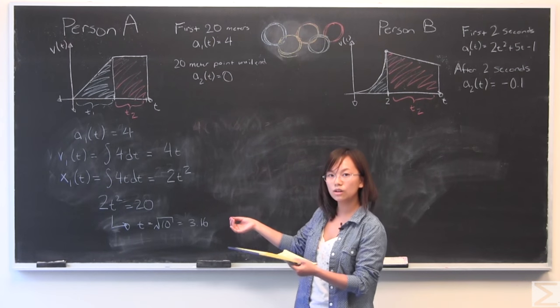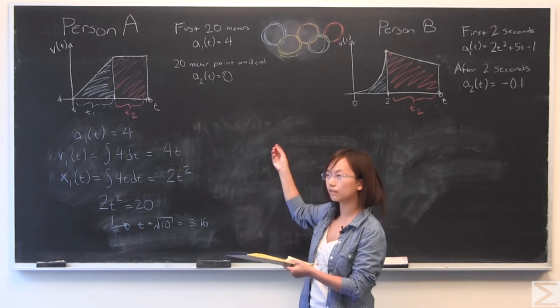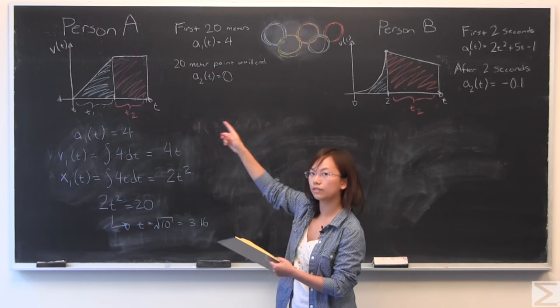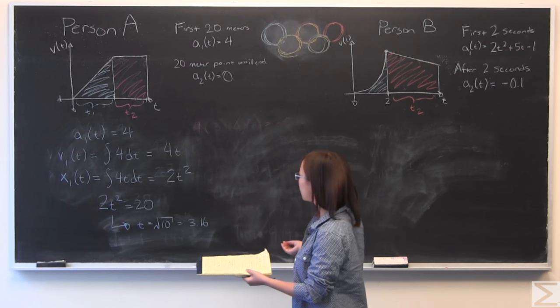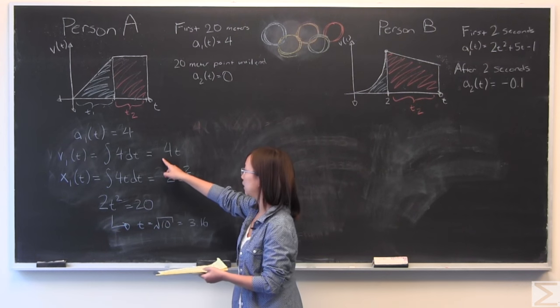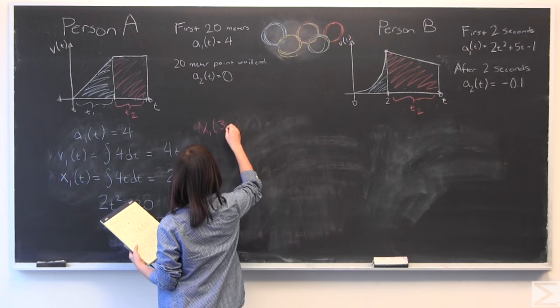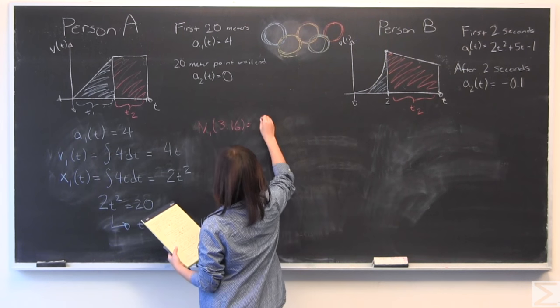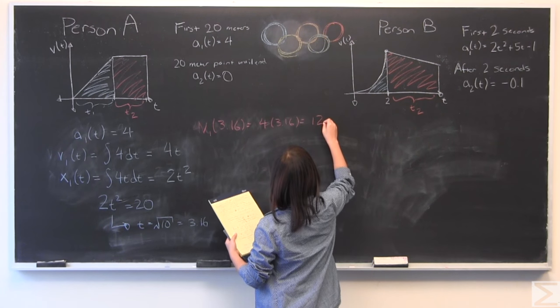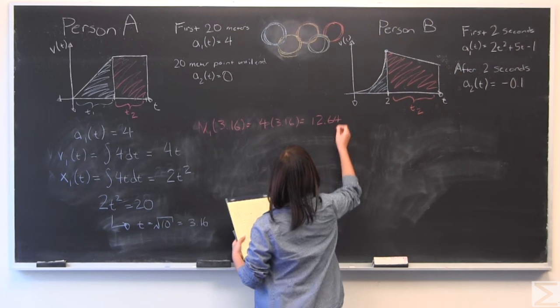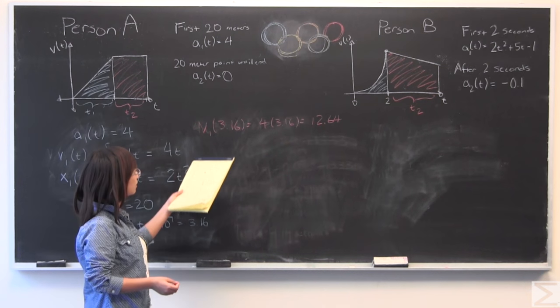Now, from this, we can find what velocity is at the end of that acceleration. And for the duration of the rest of the race, we know that since the acceleration is zero, that velocity is going to be constant. That's how fast person A is going to be traveling until the end of the race. So very simply, we can just put in 3.16 into this equation to get that velocity. And we see that person A is traveling at 12.64 meters per second by the end of that 20 meter stretch.